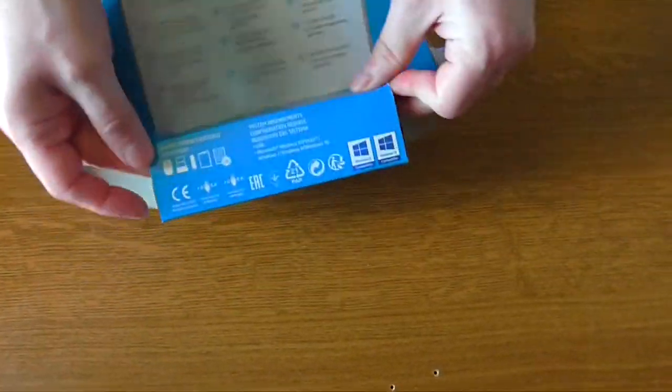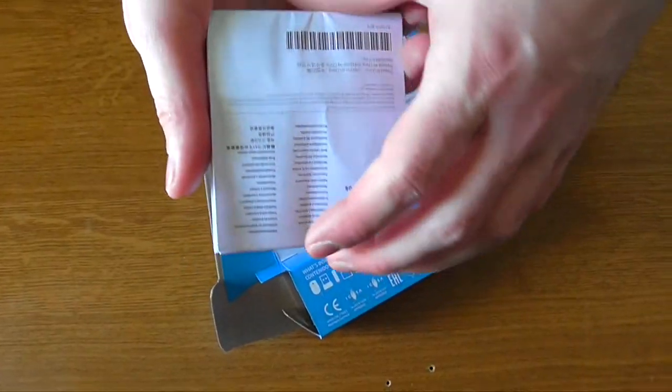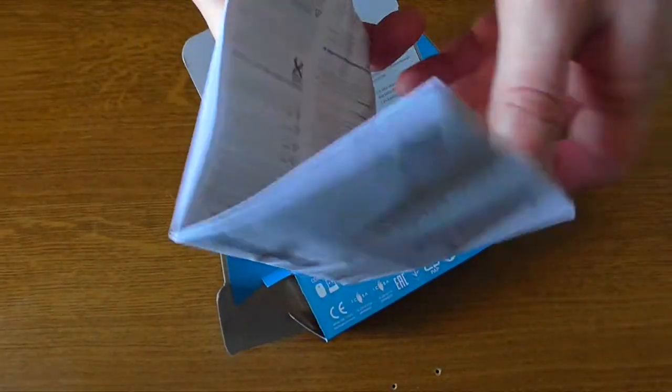Now, opening this compartment of the box that stores all the paperwork. This includes the user's manual and the warranty, which can be found in various languages.